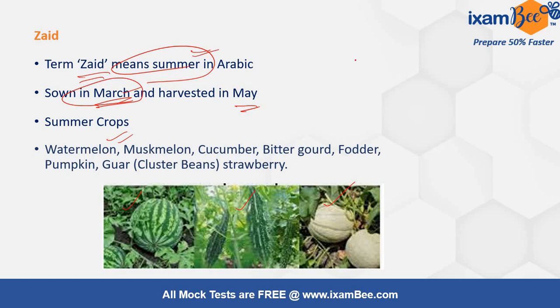Questions are quite easy — they give you names of crops and ask which one among them is a Zayad crop. They may give a 'Match the Following' and ask you to correctly match them, or ask which one is incorrectly matched. These are the types of questions asked in the exam.